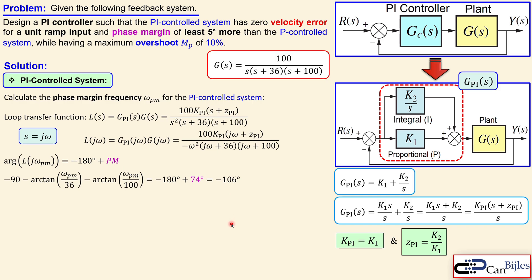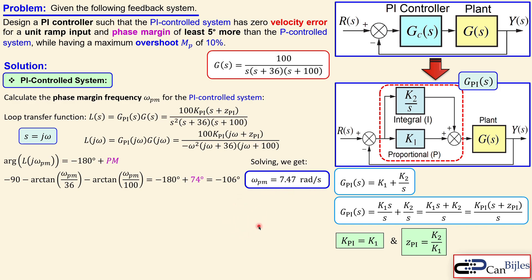We need to solve this equation. Using a calculator, this gives omega_pm = 7.47 radians per second. So we now have our phase margin frequency.